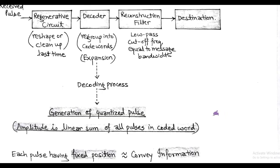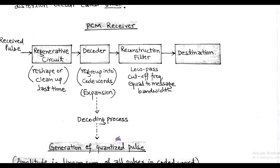Now this quantized pulse is passed through the reconstruction filter, which is a type of low pass filter having cutoff frequency equal to the message bandwidth. After filtering, we get the original form of message signal that is in the continuous form.